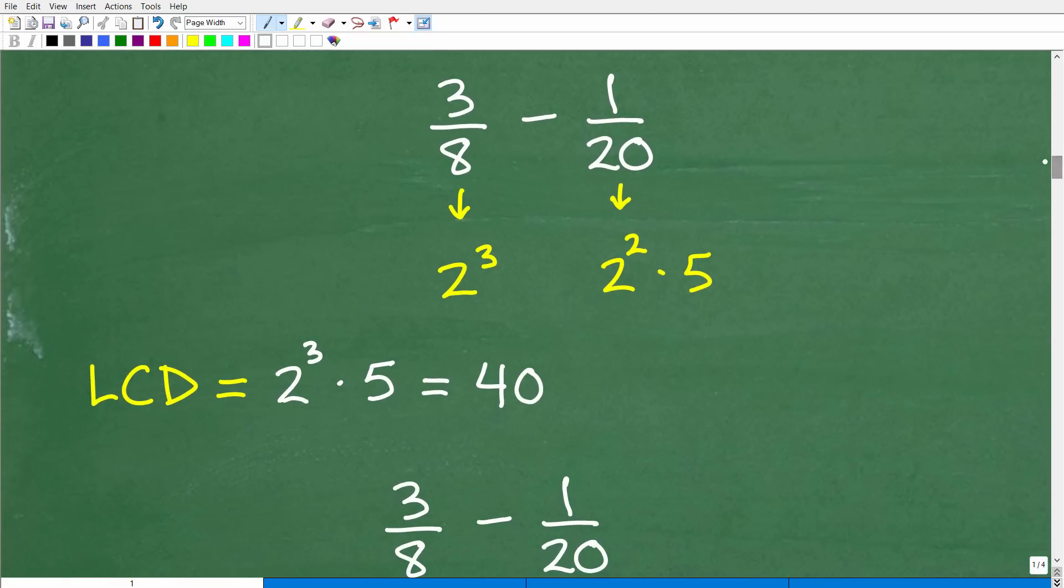But anyways, let's go ahead and just see if you can get the LCD, and let's talk about that right now. Okay, so the LCD, or the lowest common denominator, when we have 8 and 20 as our denominator, is 40. Okay, so if you know that, or if you got that right, let me go ahead and give you a nice little happy face. Very, very good, okay?